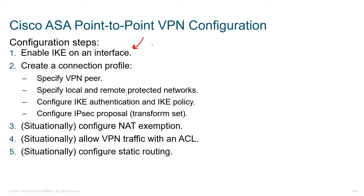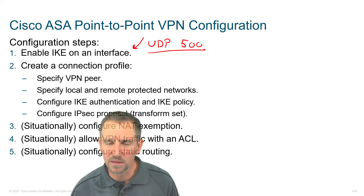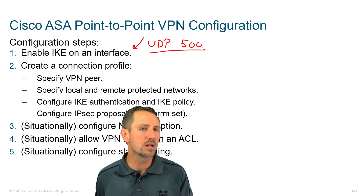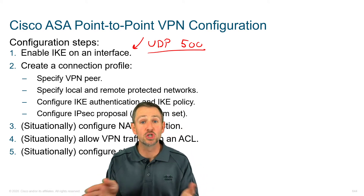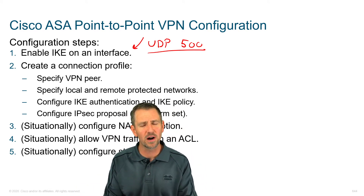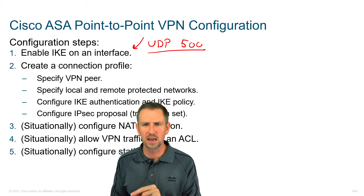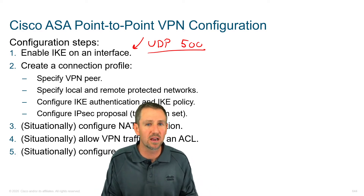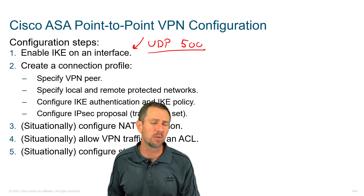If IKE is enabled, it means we're basically listening with the service on UDP 500 for incoming negotiations. From a Security 101 perspective, just shut it off if you don't need it. If you have a firewall and you're not configuring VPNs at that moment, go ahead and turn off IPSec by disabling IKE.